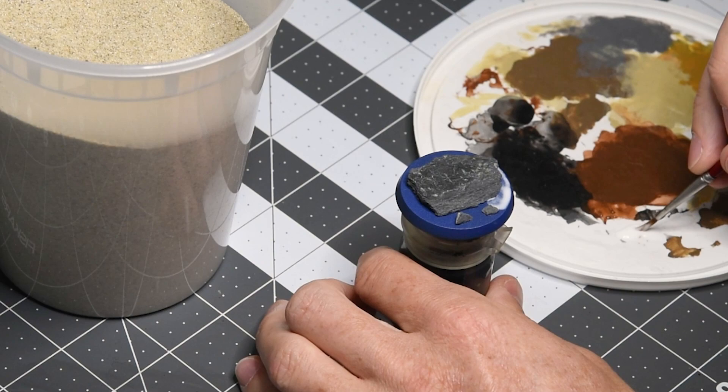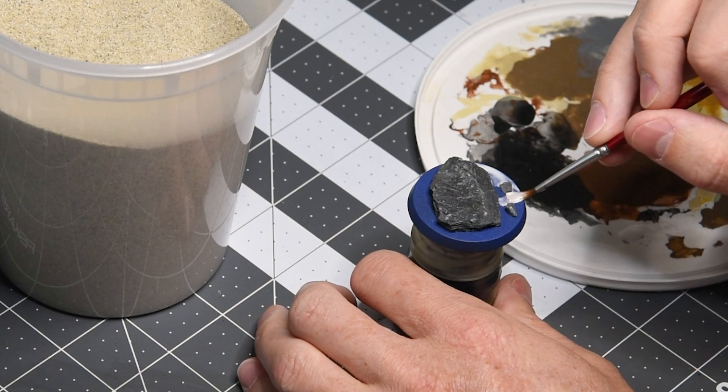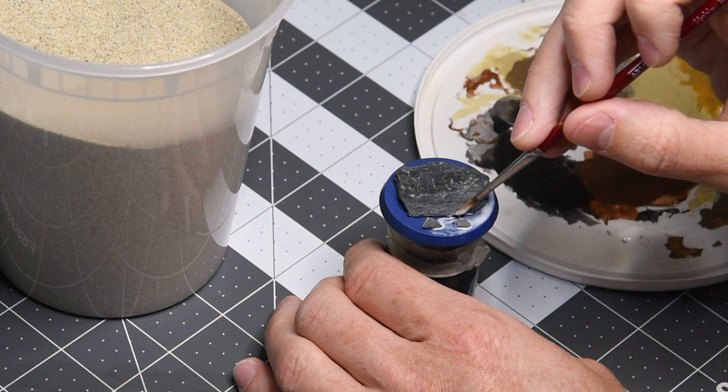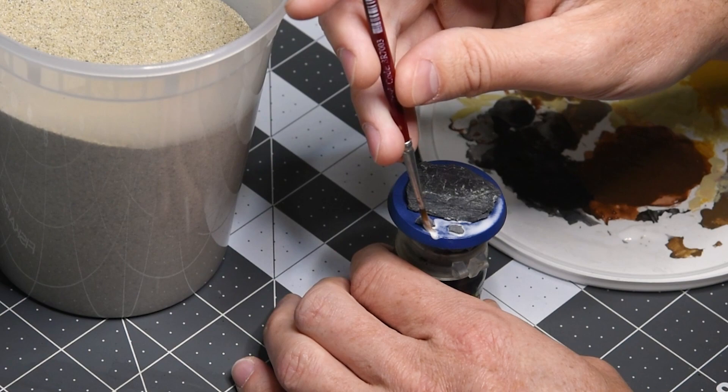So you'll notice a few things straight away. One, the base itself is blue. And that's just because I primed the miniature in Macragge Blue since that's the main base coat color I used. And some of that overspray got on the base. But really any primer color is fine for the base.